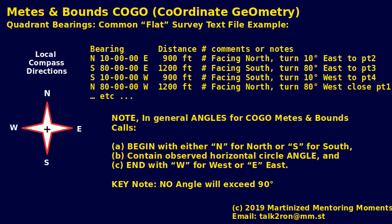Let's look at a quick example. This is a typical flat text file that you would see, minus the comments — all the hash marks or pound signs have been added for a little extra context. Typically in one of these deed calls you'll see a bearing. It'll say north, 10 degrees, 0 minutes, 0 seconds east, 900 feet. You can translate this as: facing north, turn 10 degrees east so that you can arrive at point number 2.